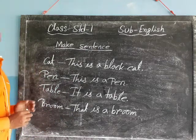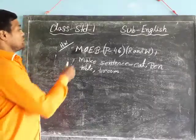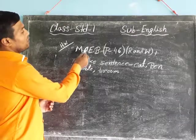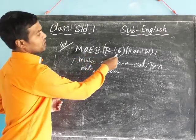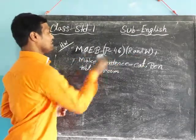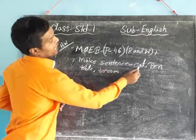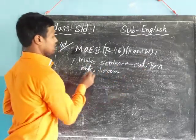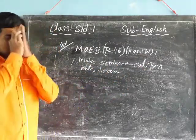Make sentences. Today is done by my own English book, page number 46. Read and write. Make sentences for: cat, pen, table, broom. Thank you.